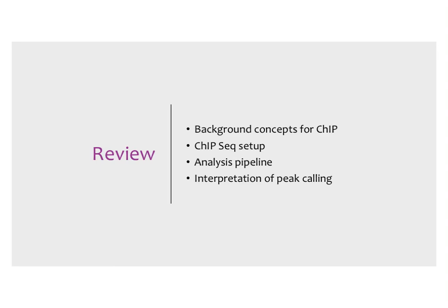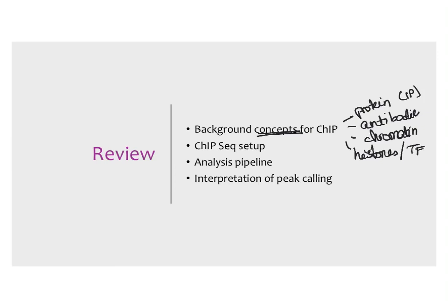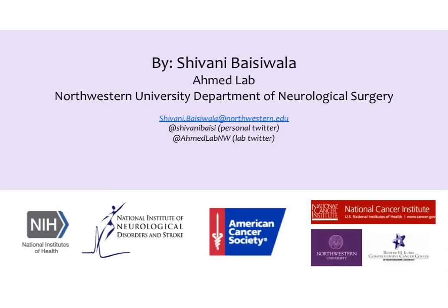To review: today we talked about the background concepts behind CHIP-seq, including proteins, IPs, antibodies, chromatin structure, histones, and transcription factors. We also covered how to set up a CHIP-seq, how to analyze it, and how to interpret peaks. If you have any further questions, please feel free to contact us. Thank you so much for listening.